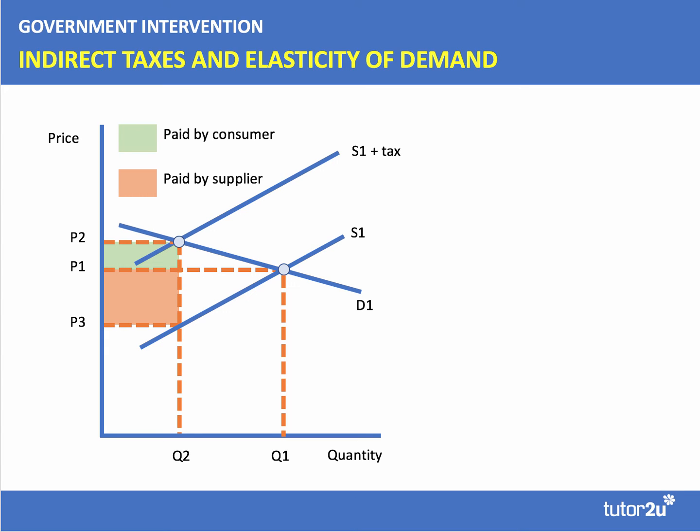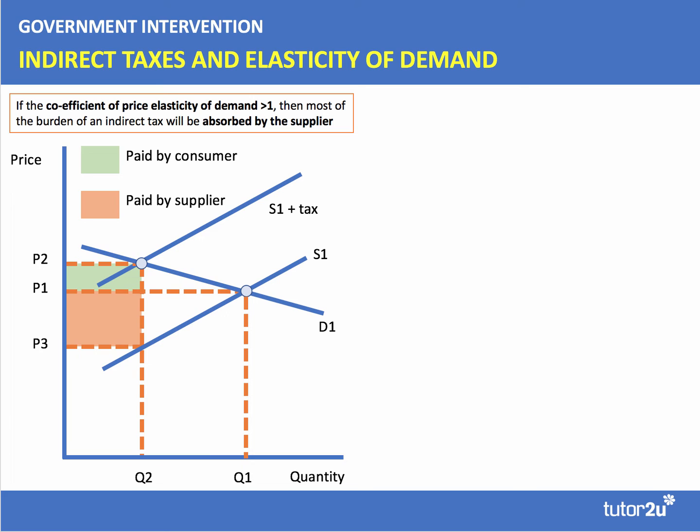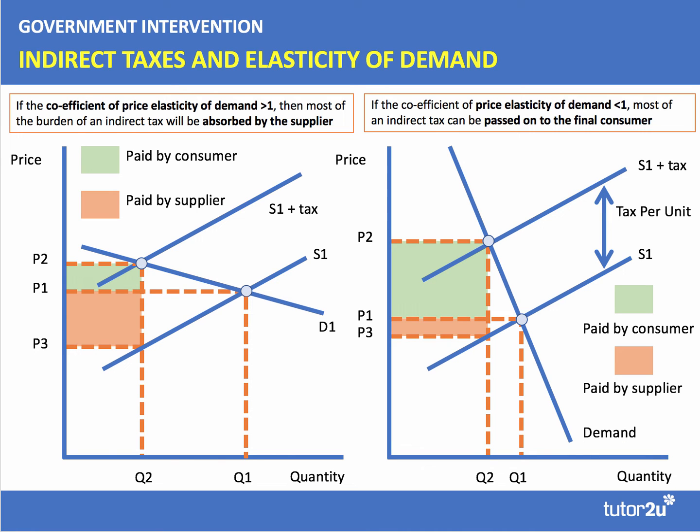When demand is price elastic, the majority of the tax burden is paid by the supplier — they have to absorb the tax, perhaps in the form of a lower profit margin. The consumer only pays a small portion of the tax. So if the price elasticity of demand coefficient is greater than one — in other words, if demand is elastic — then most of the tax is paid by the supplier.